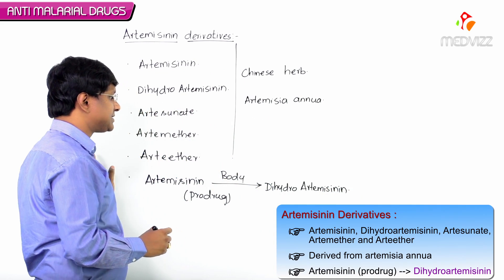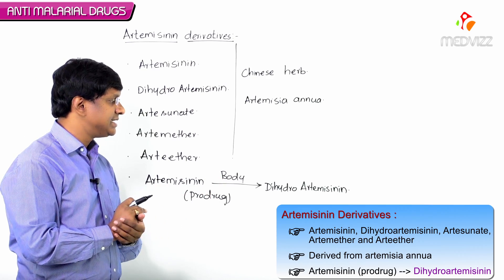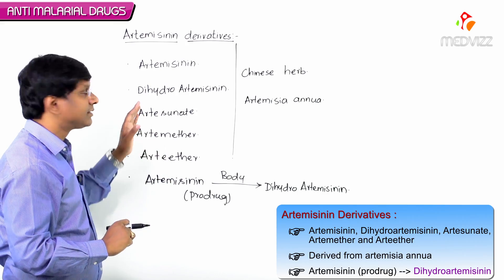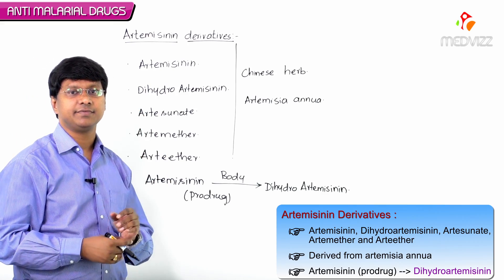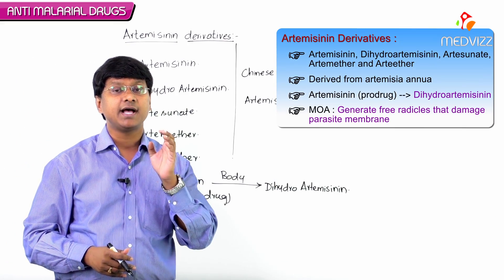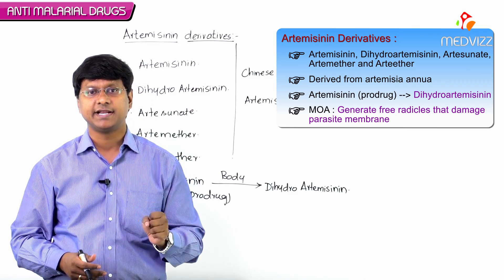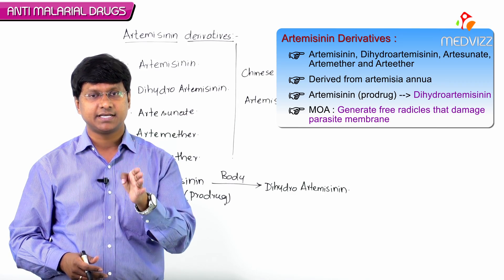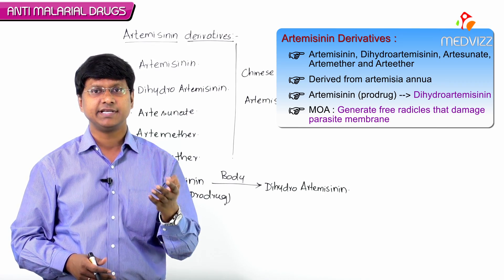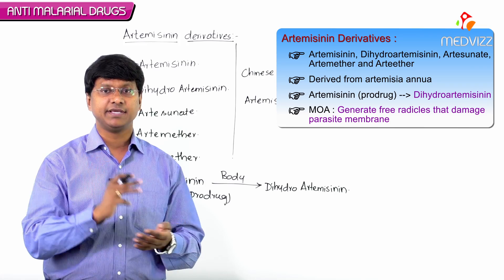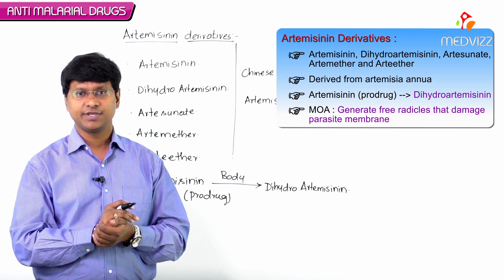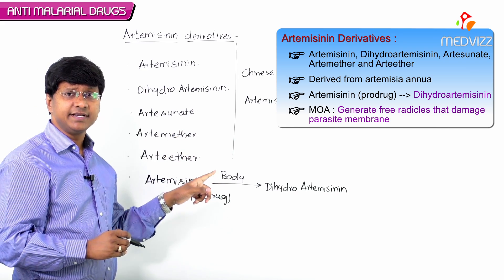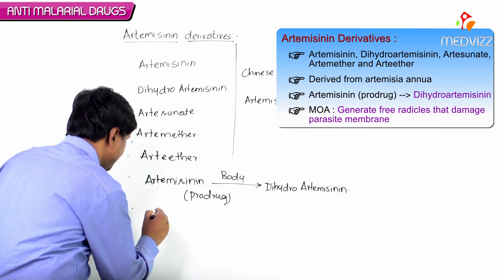Artemisinin is activated in the body into dihydroartemisinin. These artemisinin derivatives generate highly active free radicals, and these free radicals damage the parasite membranes.